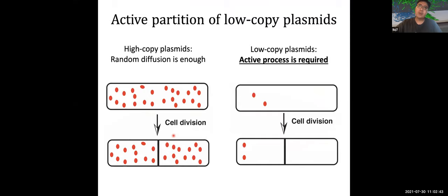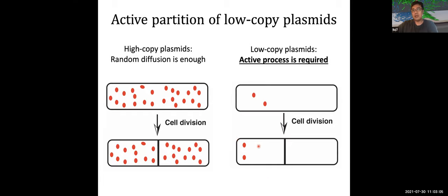For high copy number plasmids, random diffusion is sufficient to ensure each daughter cell gets at least one copy when the cell divides. But for low copy number plasmids — for example, if you only have two copies — active processes are needed to ensure proper partition. Otherwise, one can easily end up with two copies in one daughter cell and none in the other.